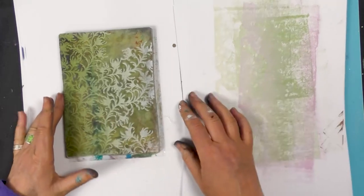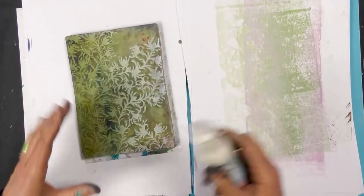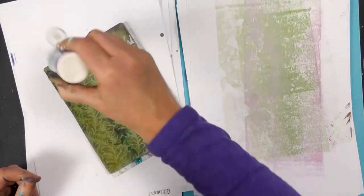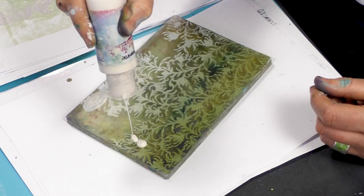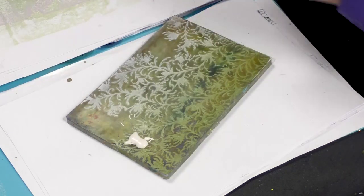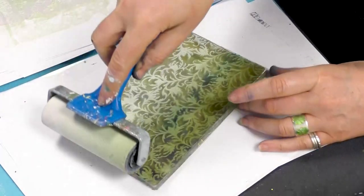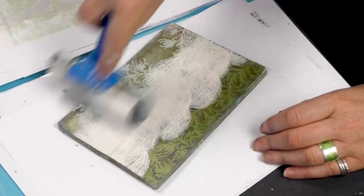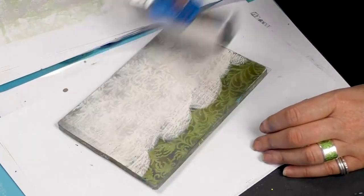So I'm going to go back to the white and pop a little over the top and then using the brayer just simply take that color over the top, nice thin layer.